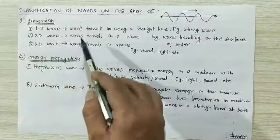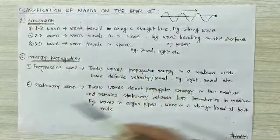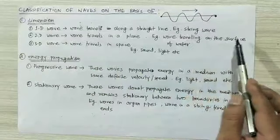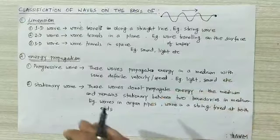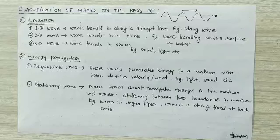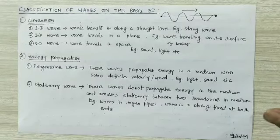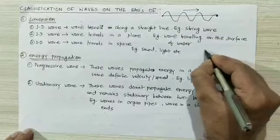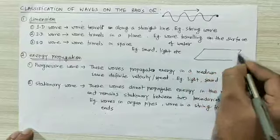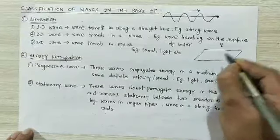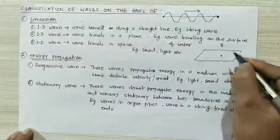What is a two-dimensional wave? A wave that travels in a plane. Example: a wave traveling on the surface of water, or a ripple. When something falls on the surface of calm water, circular waves are generated on the surface of water — these waves exist on the surface, so this is a two-dimensional wave.